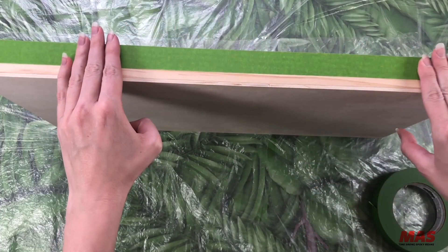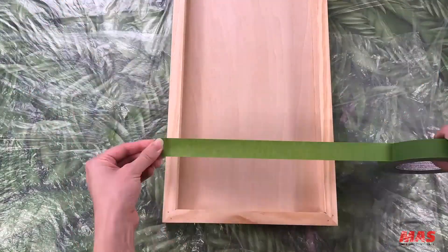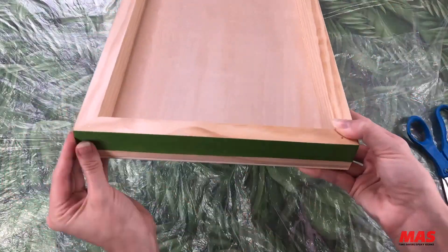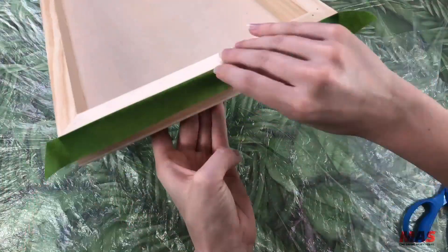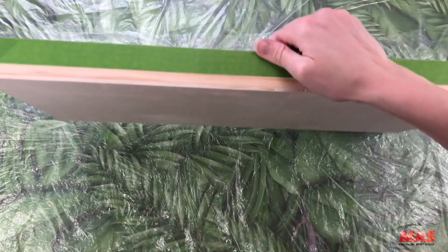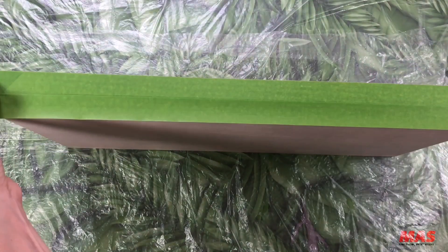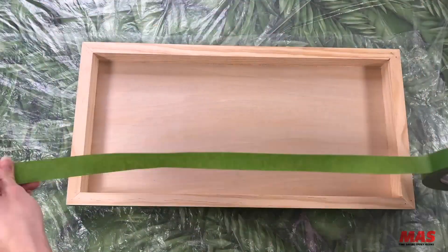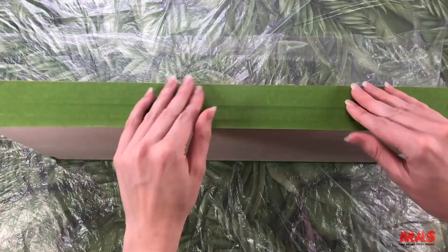First we're going to tape off our edges. I'm using frog tape which is my go-to painter's tape. Just to be on the safe side I'm covering the entire side of the panel and also the top edge.